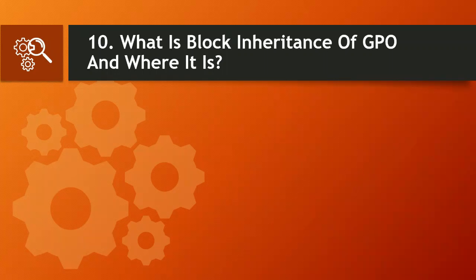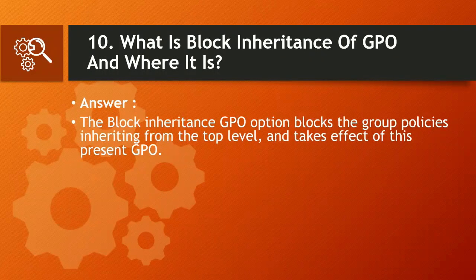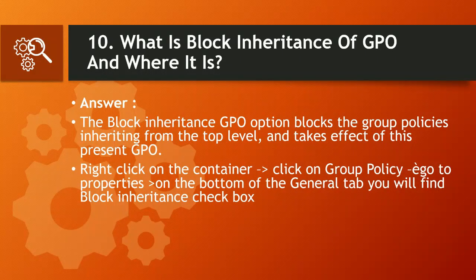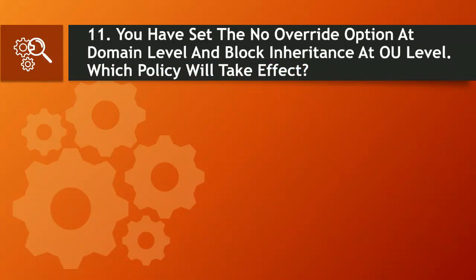Question 10: What is block inheritance of GPO and where is it? Answer: The block inheritance option blocks group policies from inheriting from the top level and makes the present GPO effective. Right-click on the container > click on Group Policy > go to Properties > on the bottom of the General tab you will find the Block Inheritance checkbox. If you select block inheritance at the OU level, then no policy from the domain level, site level, or local policy will apply to that OU.